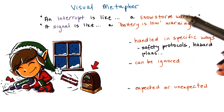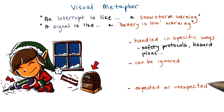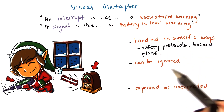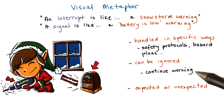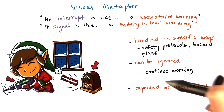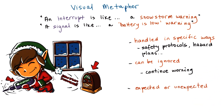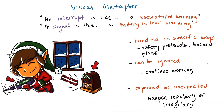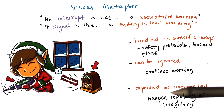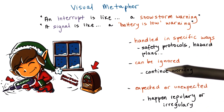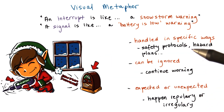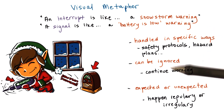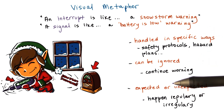In a toy shop, handling these types of events may be specified via safety protocols or certain hazard plans. There may, however, be situations in which it's appropriate to just continue working. And finally, situations like the fact that the battery died are pretty frequent — they happen regularly, so they're expected. Whether or not it is expected for a snowstorm to occur will really depend on where the toy shop actually is.